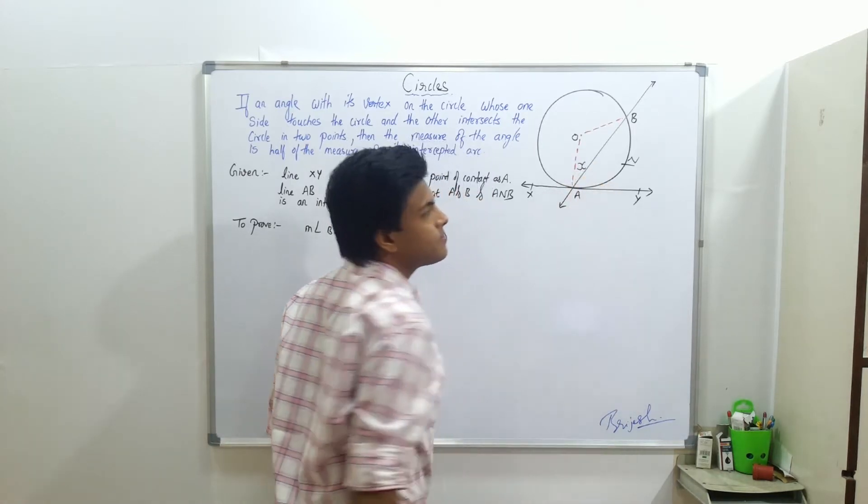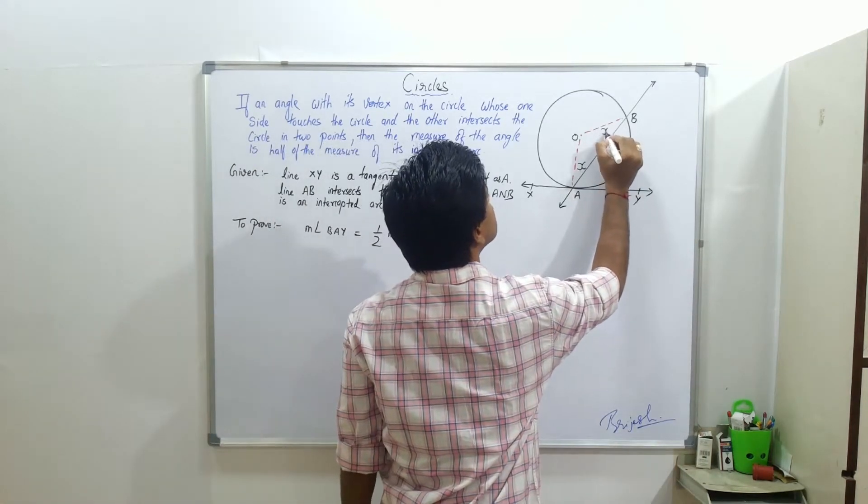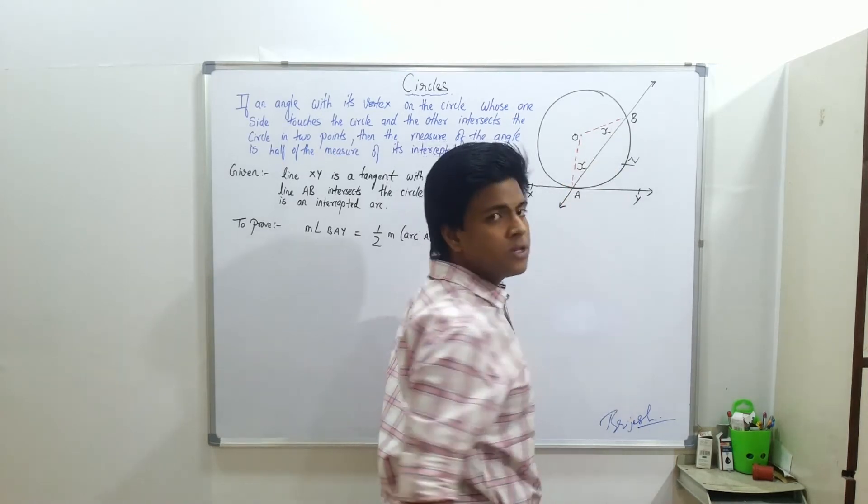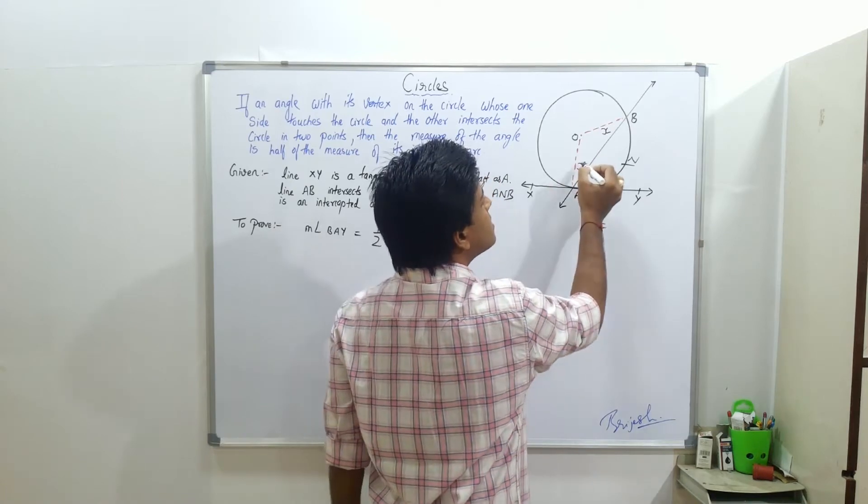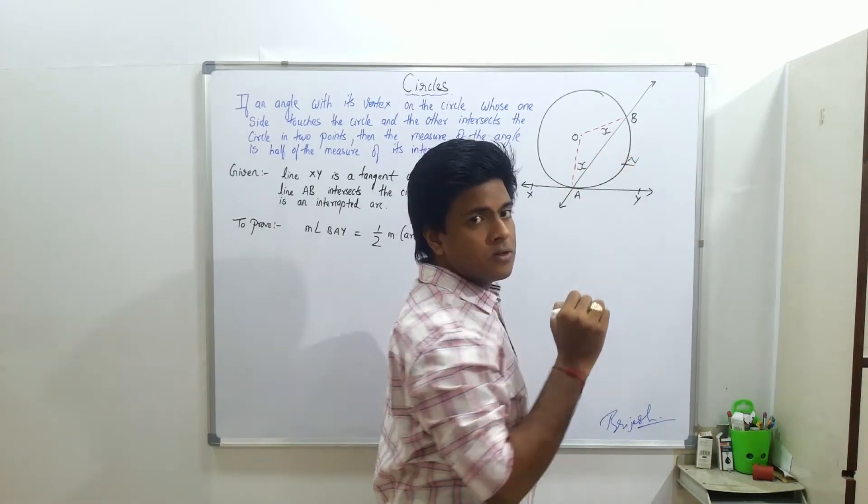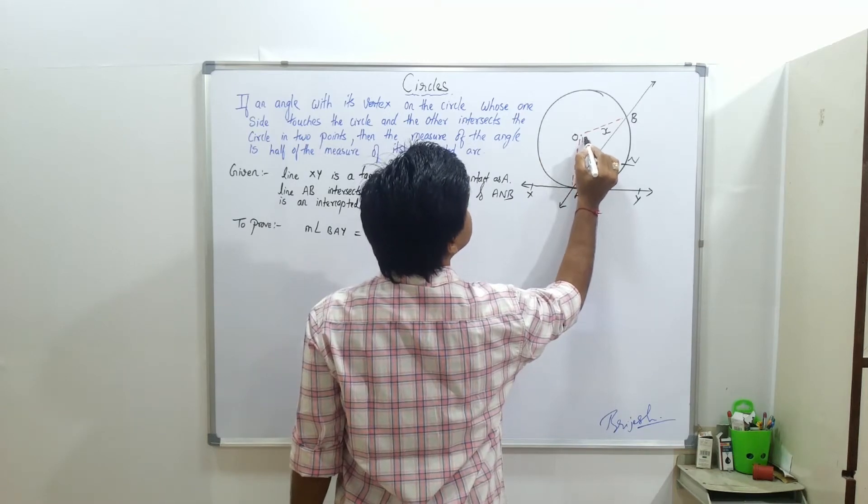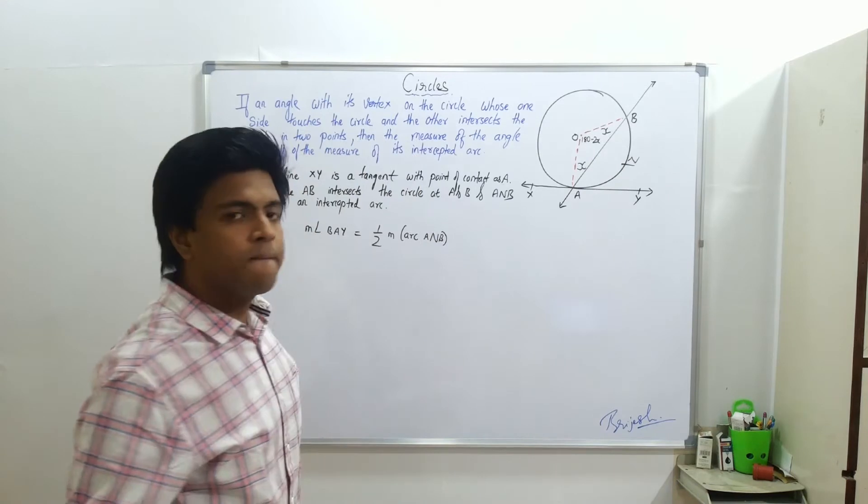Suppose this is X. This would be X because OA is a radius and OB is also a radius of the same circle. So this becomes isosceles triangle. In that case this is X, X. Now, this angle will be 180 minus 2X.